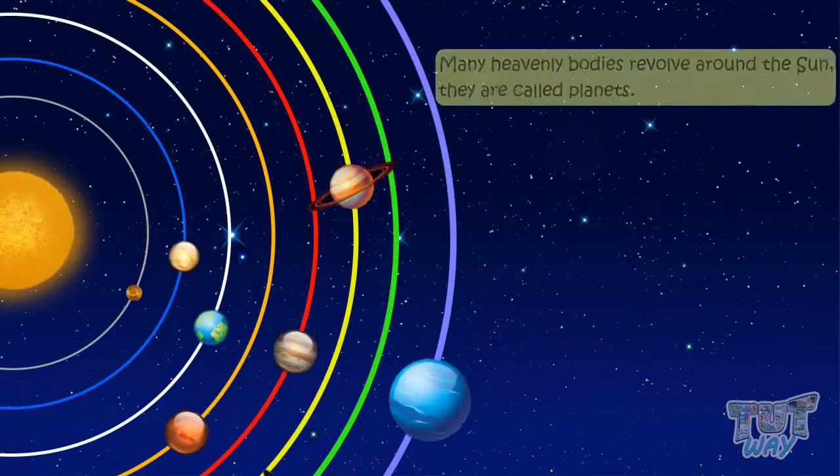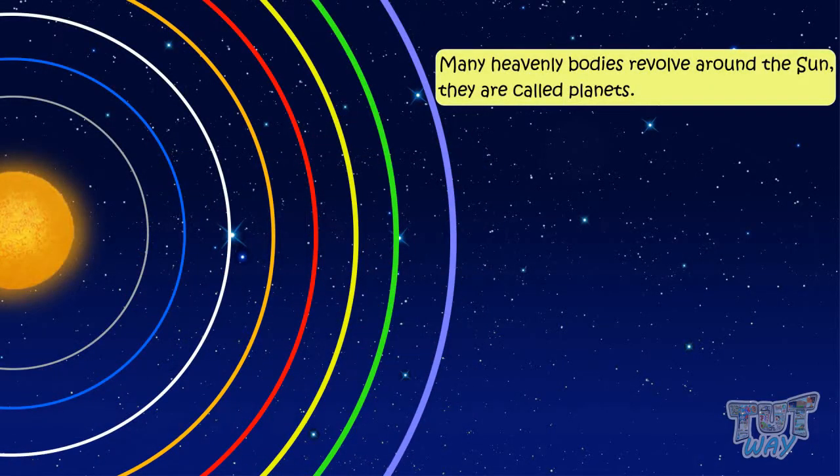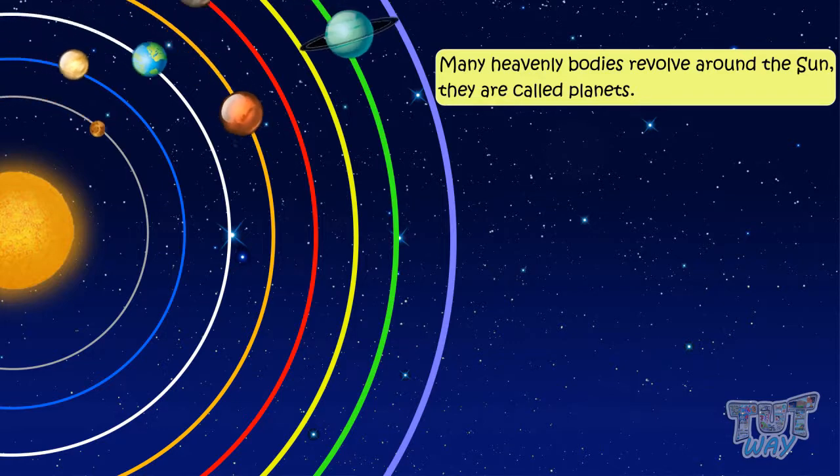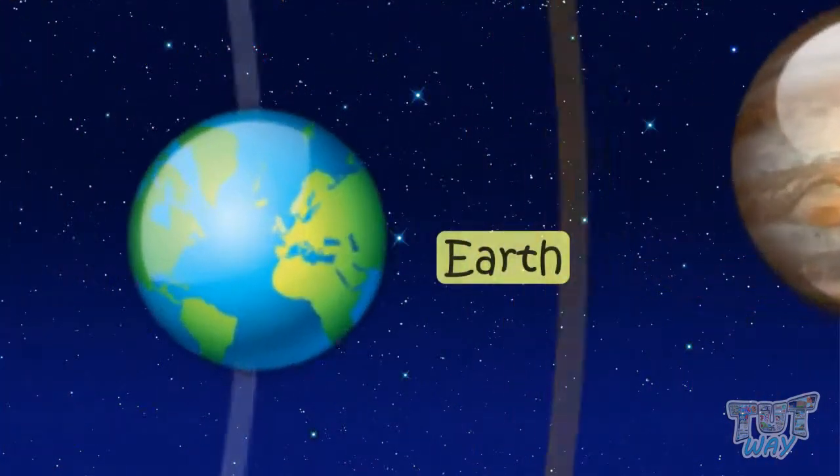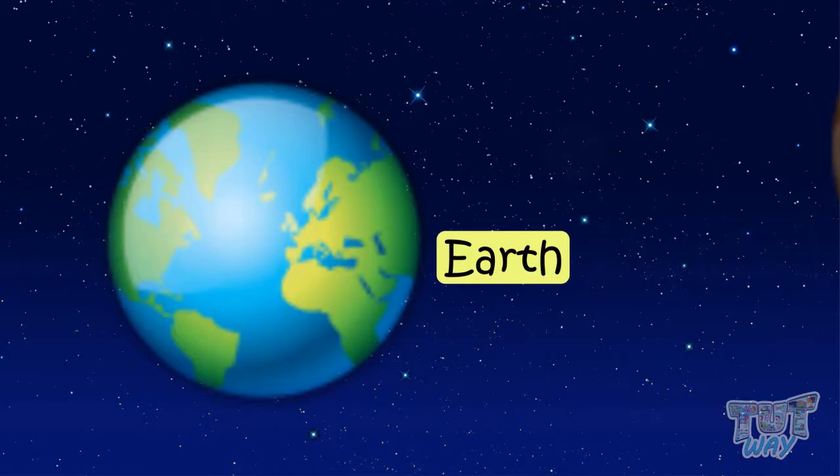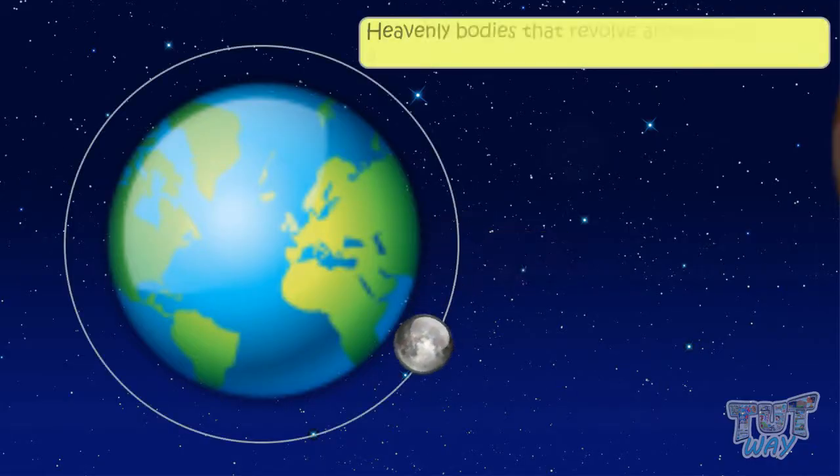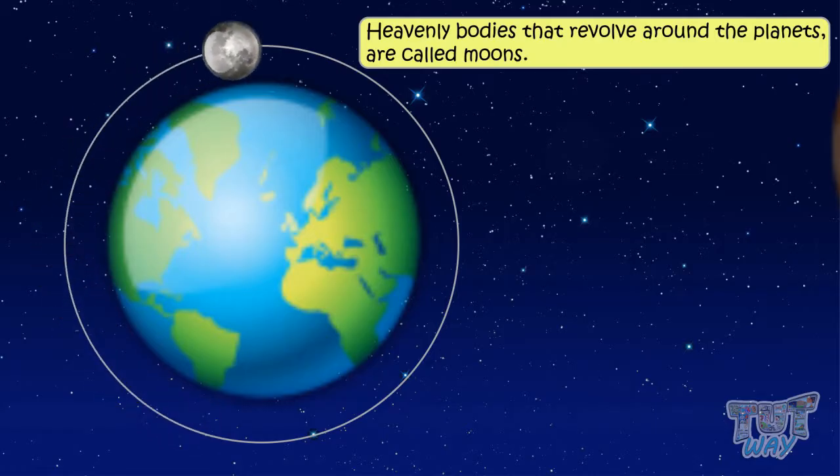Many heavenly bodies revolve around the sun and they are called planets. Our earth is one of those planets. Also, some heavenly bodies revolve around the planets and they are called moons.